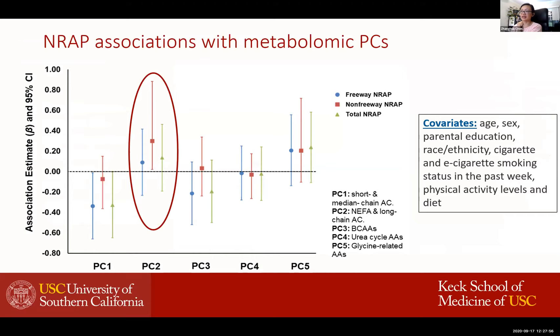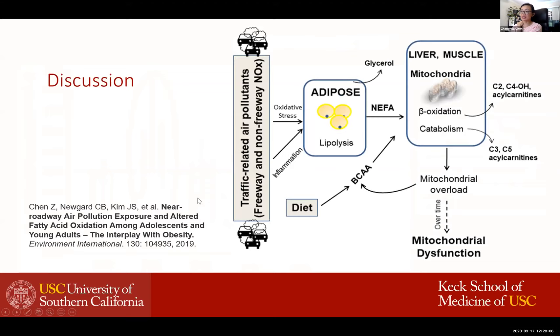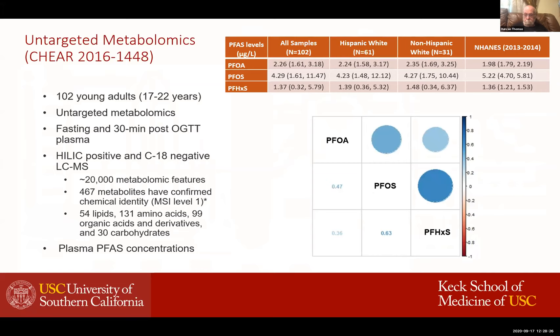We can then link the principal component scores to the air pollution exposure and find that near-roadway air pollution exposure is related to the PC2 score, which represents higher levels of long-chain acylcarnitines. Afterwards, we can use those results to make some hypothesis about the underlying disease mechanisms — such as that air pollution exposure might activate lipolysis, increase glycerol and free fatty acids, and potentially perturb the mitochondrial function.